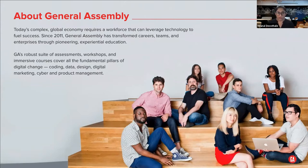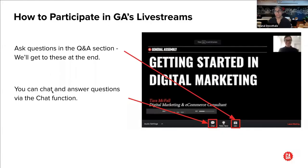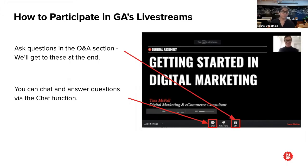If you're interested to know more about GA or our courses, you can get in touch with us. How you can participate in GA's live stream — this is a live stream webinar, so you're not visible or audible to anyone. Please do not worry about any distracting noises or backgrounds. If you look at the bottom of your screen, you have access to a couple of functions. Some of you have already started using the chat to introduce yourselves, and that's really great. Do remember to toggle to all panelists and attendees so that your message is visible to everyone.